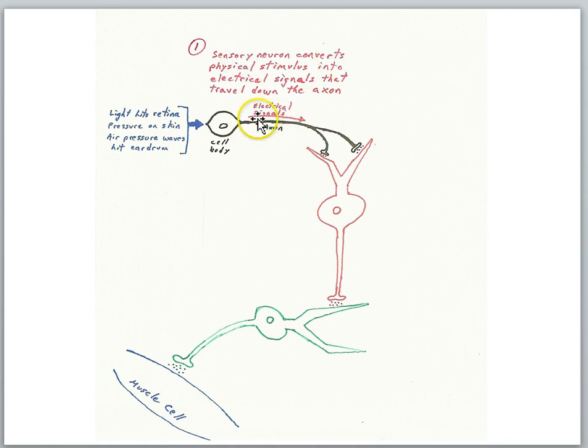And the result of that decision then may be an electrical signal as an output. So the sensory neuron converts physical stimuli into electrical signals that travel down the axon to the synapse on the target cell. But first we're going to focus on the nature of the electrical signals produced by the sensory neuron.